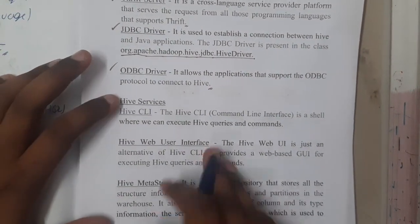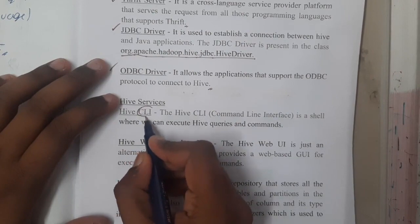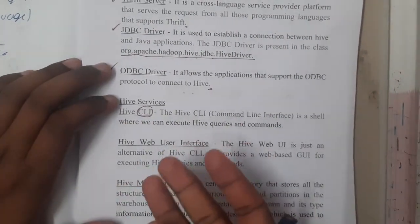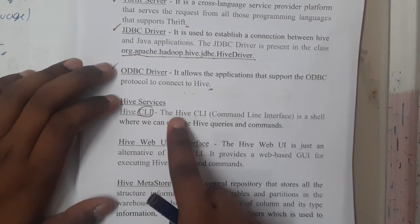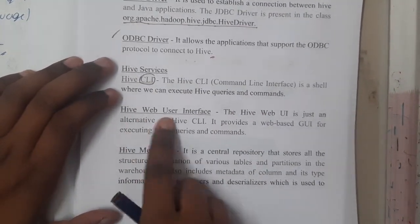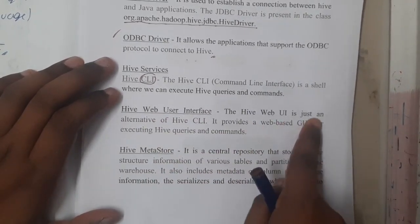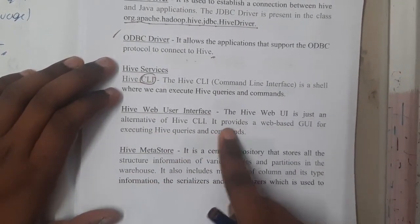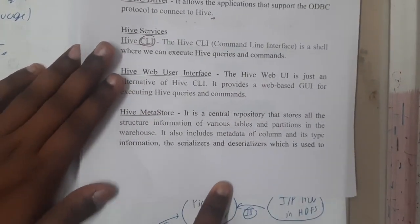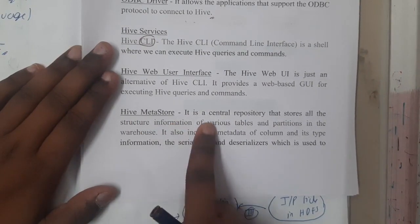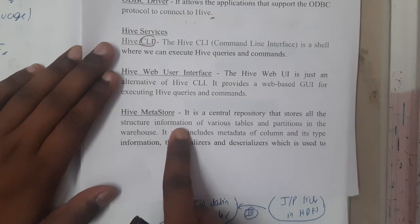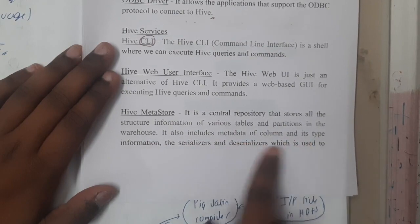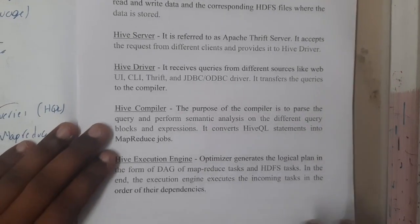Now let us move on to Hive services. Hive CLI (Command Line Interface) allows you to communicate with the server using shell-based commands. Hive Web UI is an alternative to the command line — it provides a graphical user interface for executing Hive queries and commands. Hive Metastore is a central repository that stores all structured information of various tables and partitions in the warehouse, including metadata, column names, and type information.